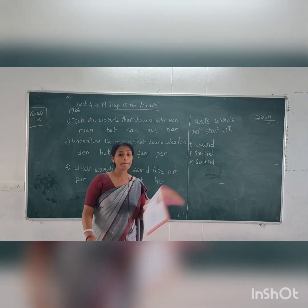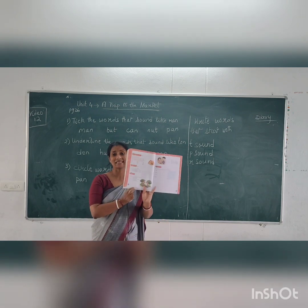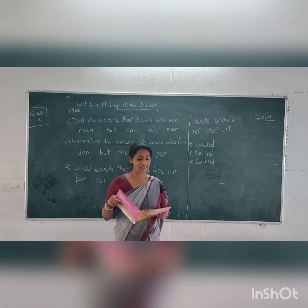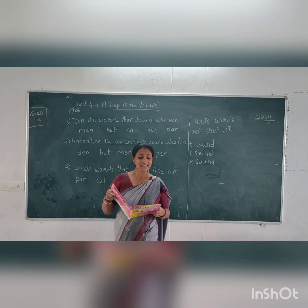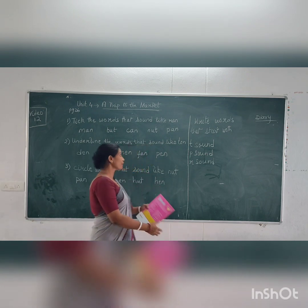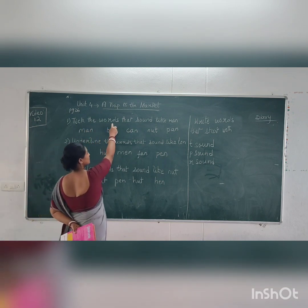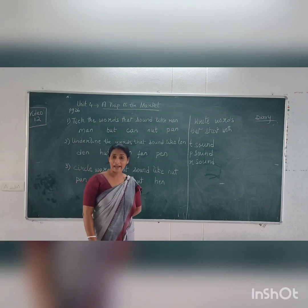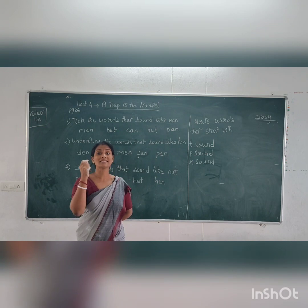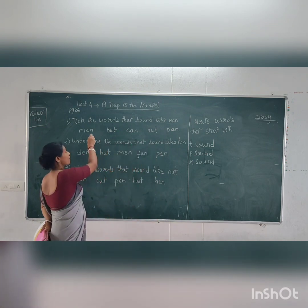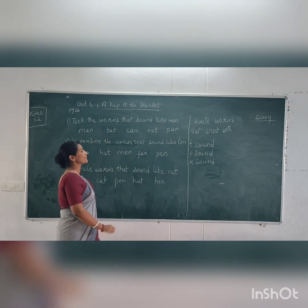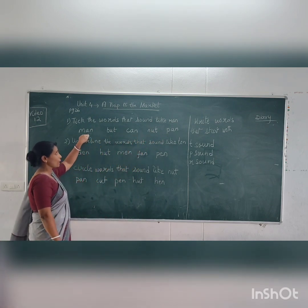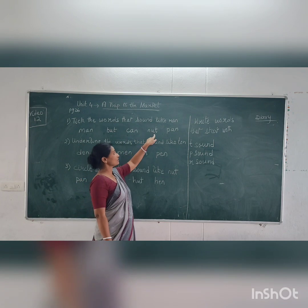Now children, all of you open page 26. We have some exercises there. See the first one: say these words aloud and tick the words that sound like 'ran'. You have to find words with the 'an' sound. The words given are: man, but, can, nut, pan.